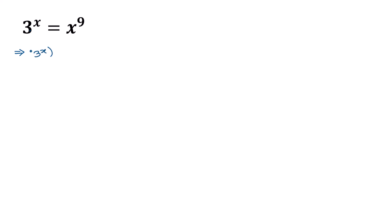...whole to the power 1 over x is equal to x to the power 9, whole to the power 1 over x. Now applying the formula a to the power m, to the power n, is equal to a to the power mn. We can write this as 3 to the power x times 1 over x, and the right side as x to the power 9 times 1 over x. This x and x will cancel out, so the left side becomes simply 3.